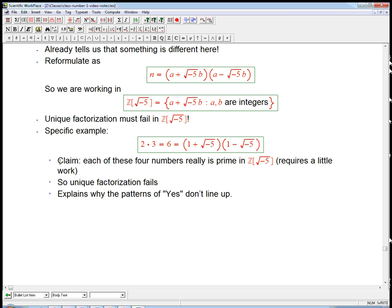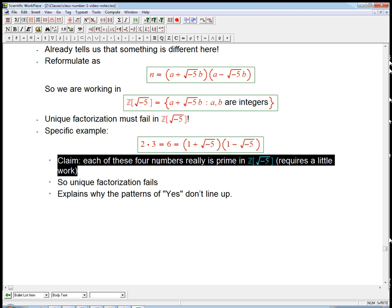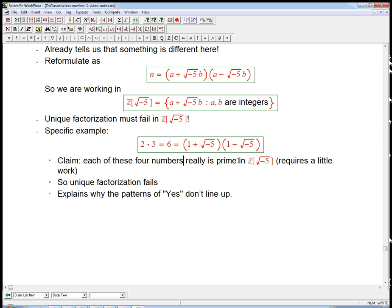Now, I'm not going to show you the work to show you that each of these four numbers really is actually prime in Z adjoined root minus 5. But they are. And so they're certainly irreducible. The 2, the 3, and these guys cannot be broken up into smaller pieces.